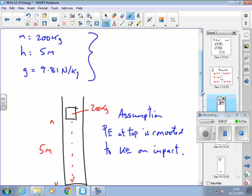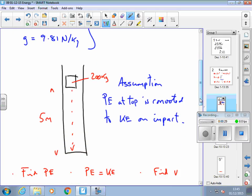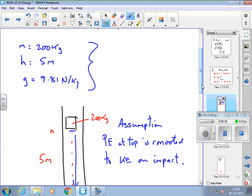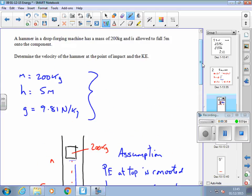So here's the situation. We can imagine this drop hammer coming down and then striking something at the bottom. In all these sorts of problems, as I've mentioned already, just extract the information that you're given. I know that the mass of this thing is 200 kilograms, the height is 5 meters, and g is 9.81 N/kg.